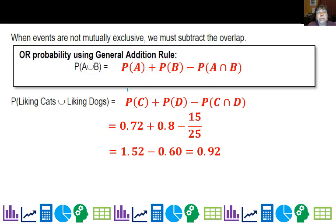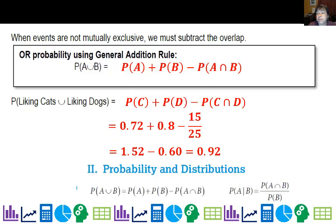By the way, the good news on this formula, it is on your formula sheet for the AP test. So you do not need to memorize it. Probability of A or B equals probability of A plus probability of B minus probability of A and B.